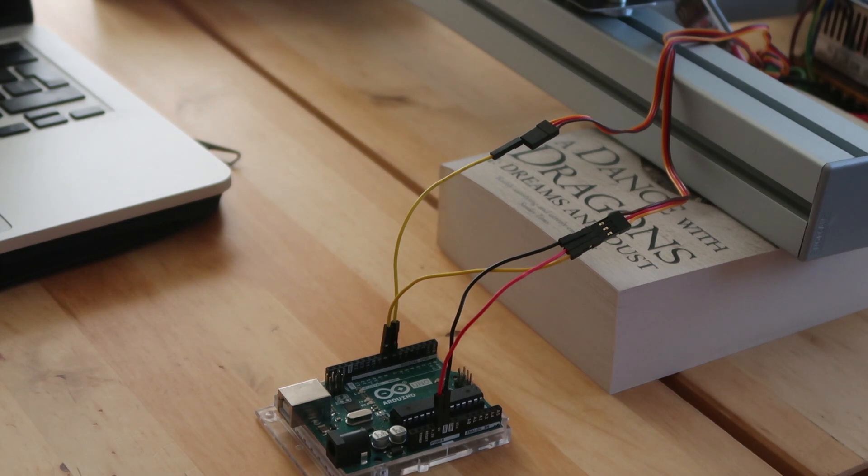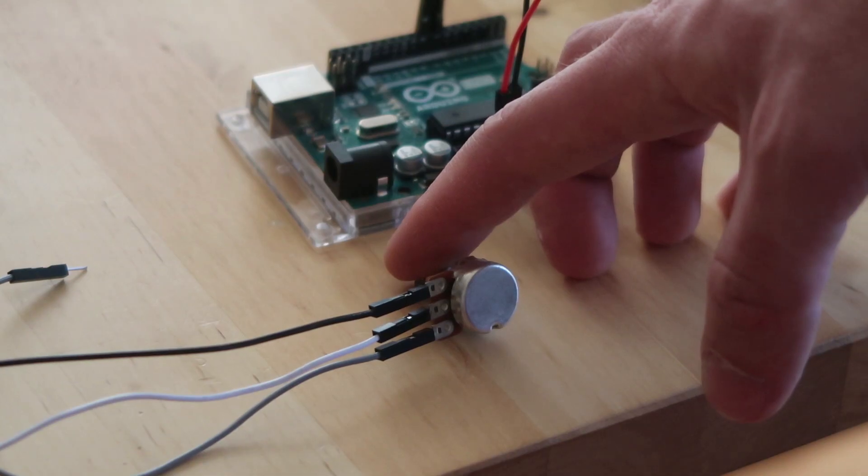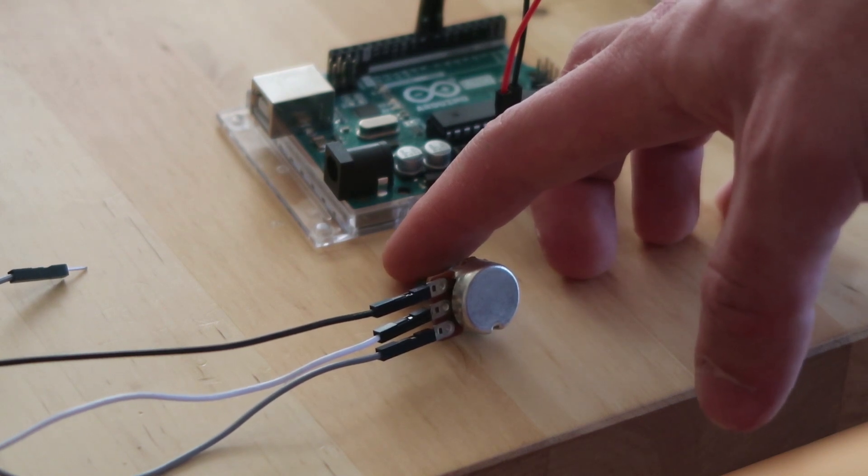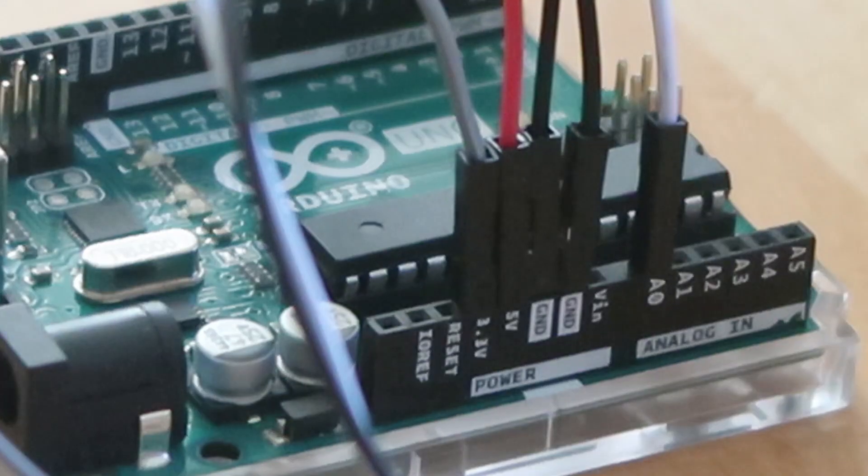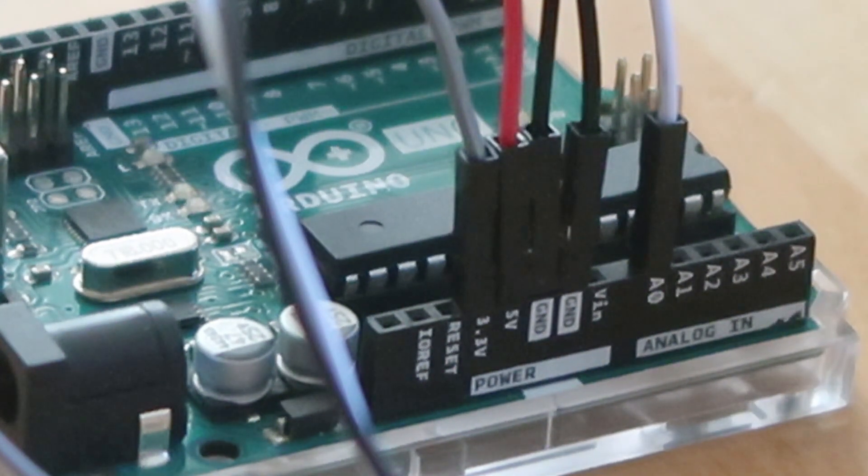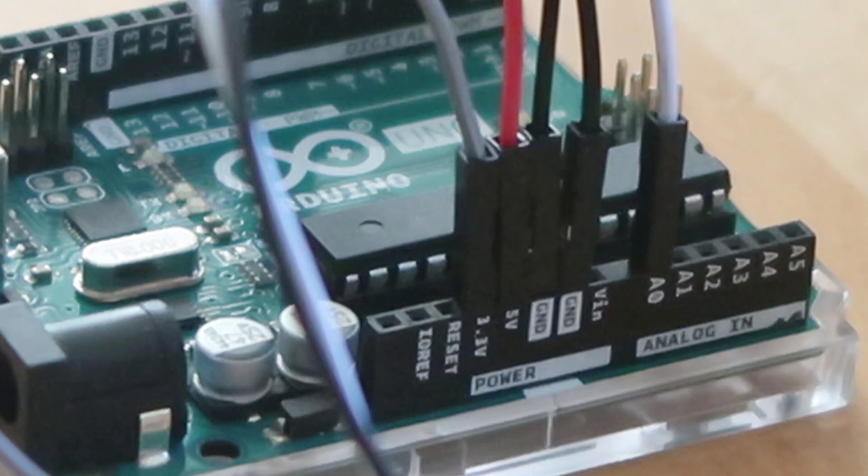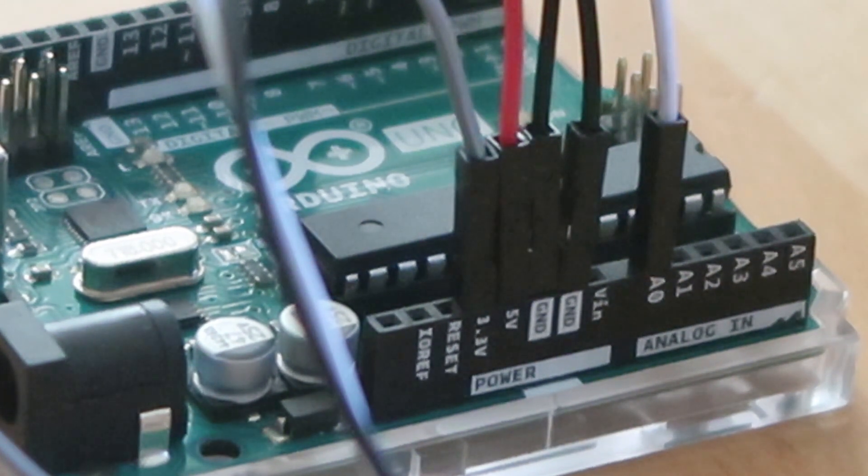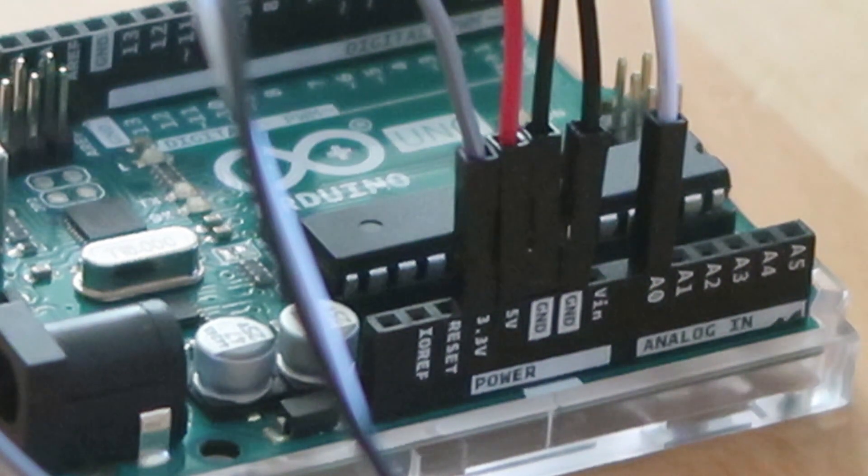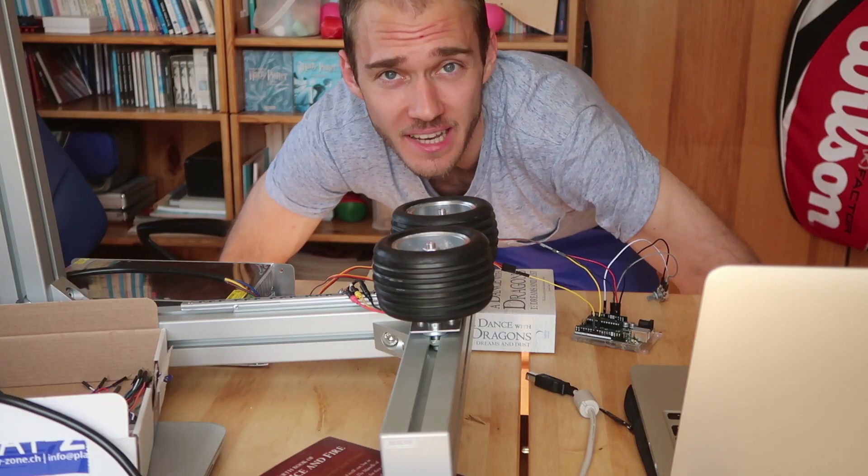Okay the ESCs are connected now we have to connect the potentiometer. A potentiometer has three wires, one is the high voltage, one is the ground, and the one in the middle is the analog output. You can see I put the gray cable so the high voltage to 3.3 volts, the black cable to the ground, and the white cable to the analog input A0. Okay guys let's try it out.